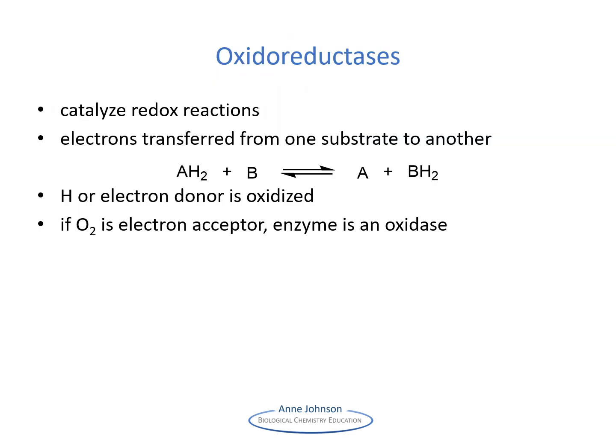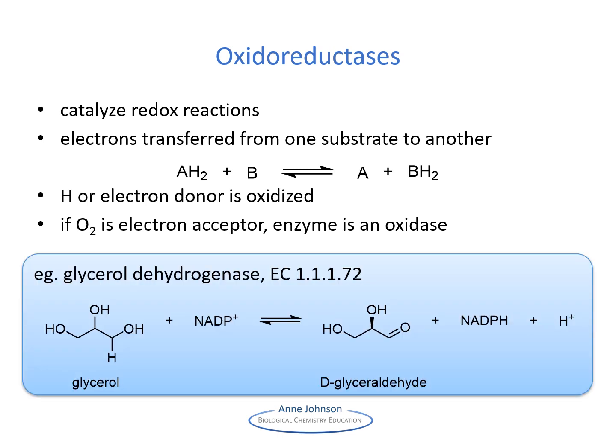The oxidoreductases all catalyze transfers of electrons to or from substrates. Many of these enzymes involve the transfer of hydride and are called dehydrogenases. A special subgroup catalyzes reactions in which molecular oxygen is the electron acceptor — these enzymes are called oxidases. In this example of a dehydrogenase reaction, the hydride from carbon-1 is transferred to the electron acceptor NADP⁺ and the hydrogen atom of the alcohol leaves as a proton, resulting in the primary alcohol of the substrate glycerol becoming an aldehyde.